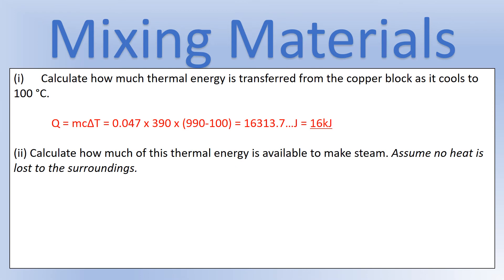The copper block is not changing state, so we use Q = mcΔT. Convert grams to kilograms first. The temperature change is calculated with final and initial temperatures arranged to give the energy transferred out of the block to the can and water. This calculation tells us that 16 kilojoules of energy are transferred from the copper block to the water and the copper can.